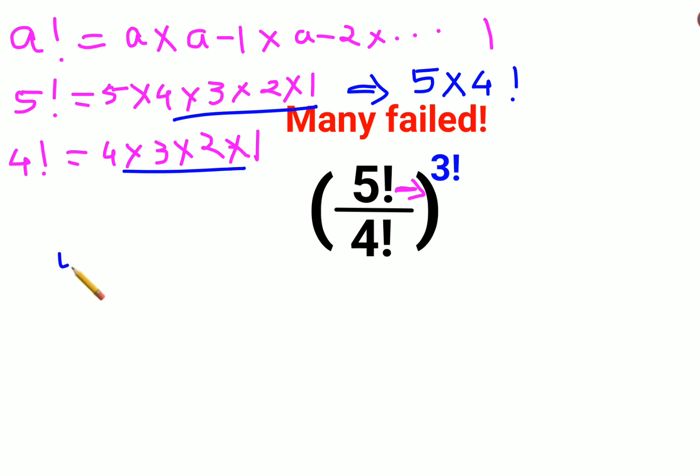So let's write it over here. 5 factorial, instead of 5 factorial, I will write it as 5 into 4 factorial upon 4 factorial, everything is raised to 3 factorial.